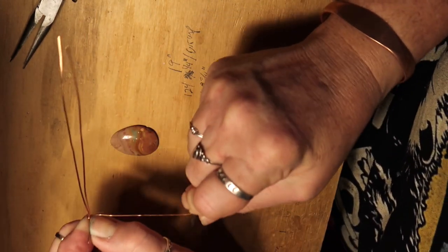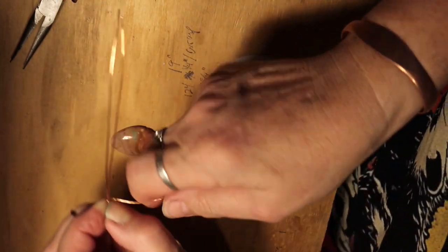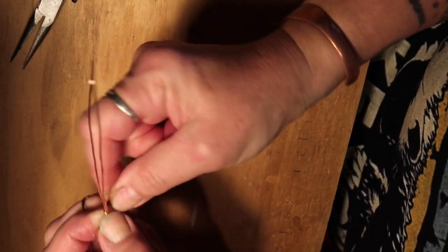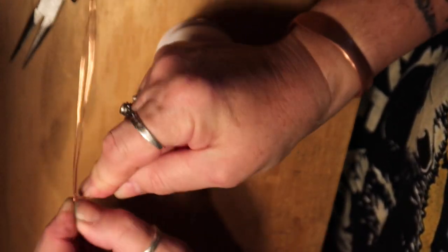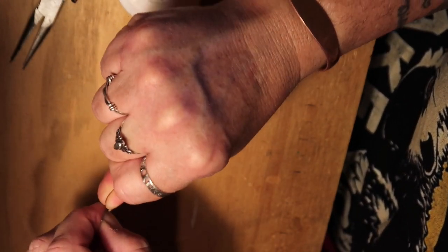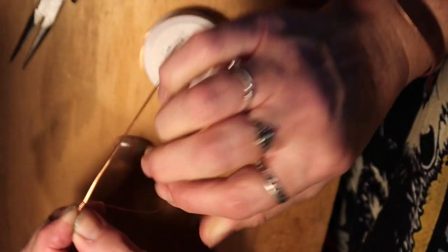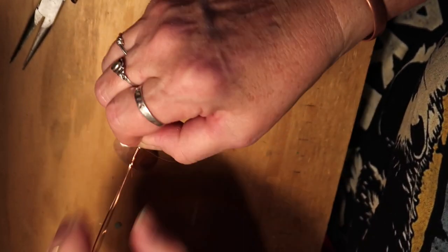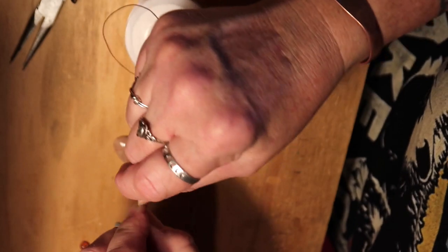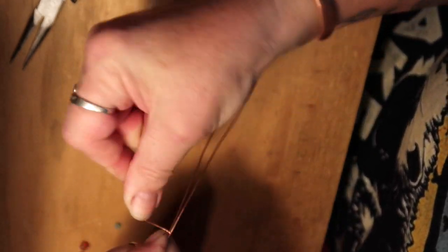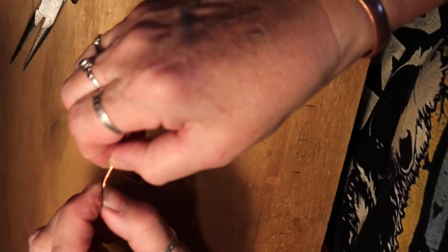You're just going to go around not letting them crisscross each other. Just a few quick wraps. Because this is going to be the base of our design. It's going to cradle the bottom of the cab.